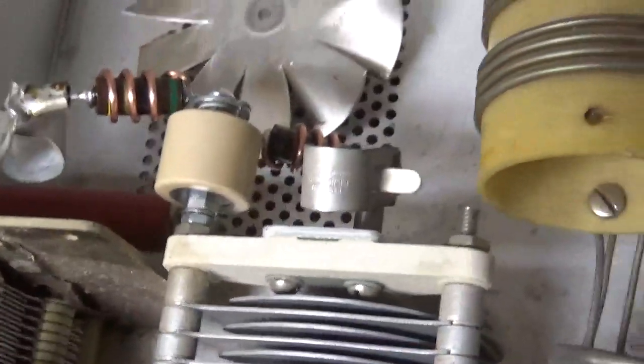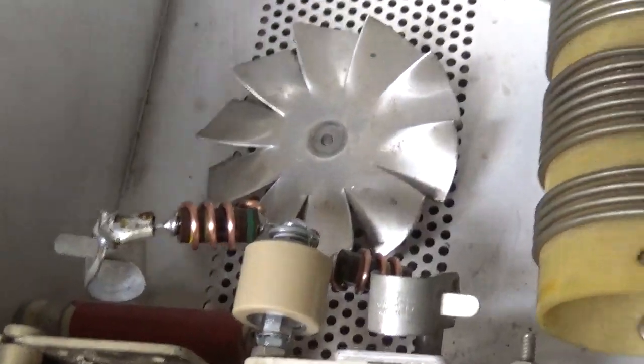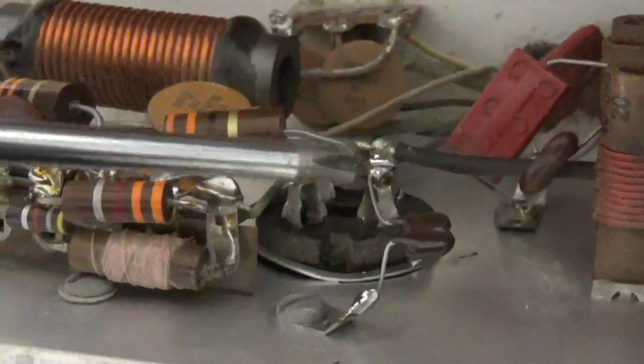So changed the plate blocker. Rewound new parasitic suppressors with 2-watt carbon comp resistors. I changed the grid loading resistors and the mica cap from grid to ground.